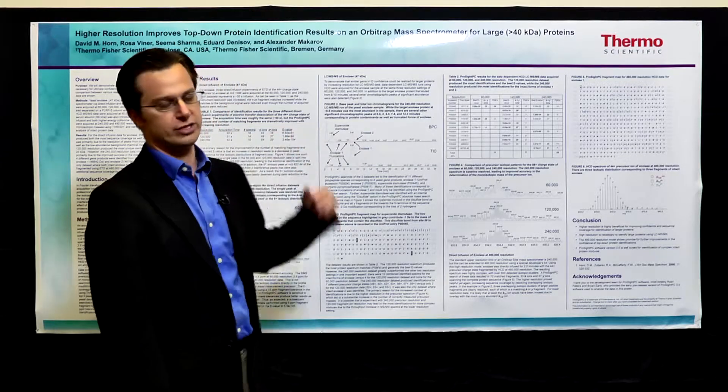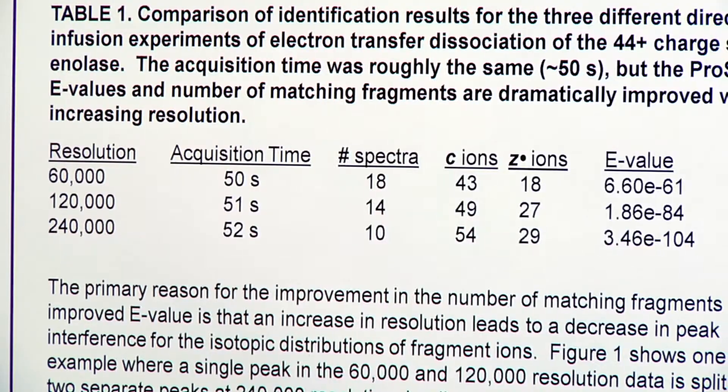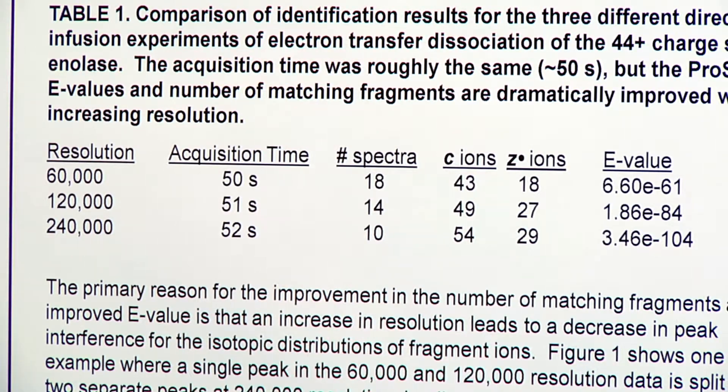as shown right here, is a direct infusion experiment on intact enolase, acquired at three different resolutions: 60,000, 120,000, and 240,000.